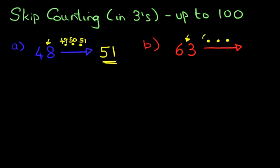63, 64, 65, and 66. That is our answer, 66. The number after 63 when counting in threes is 66.